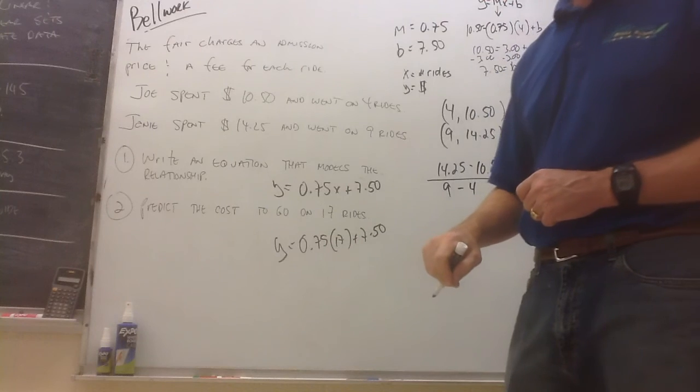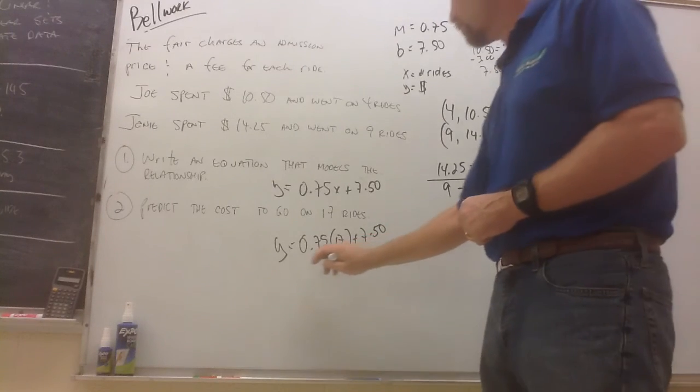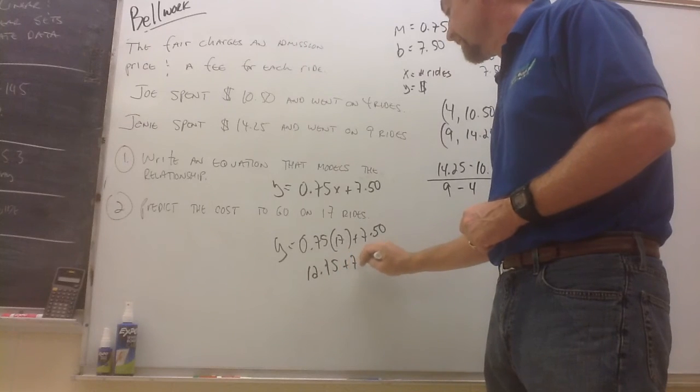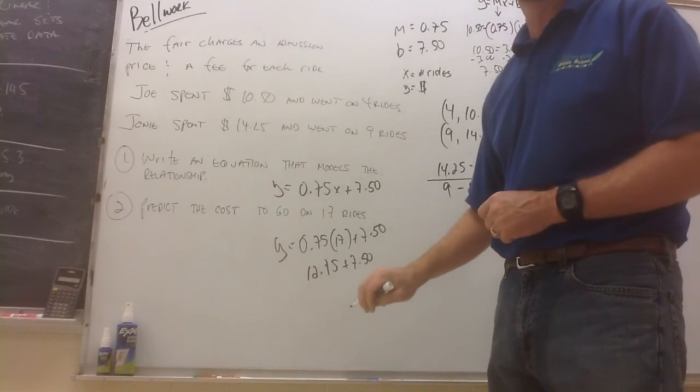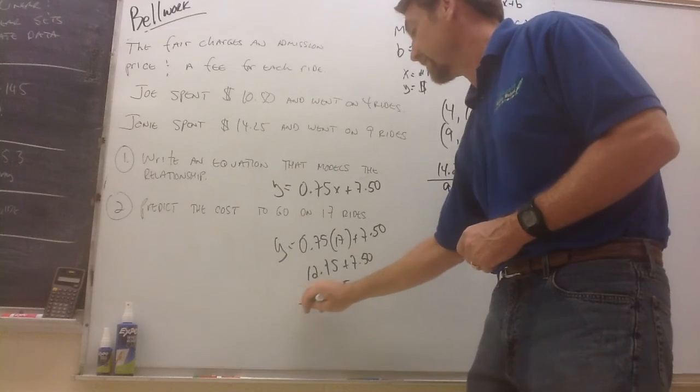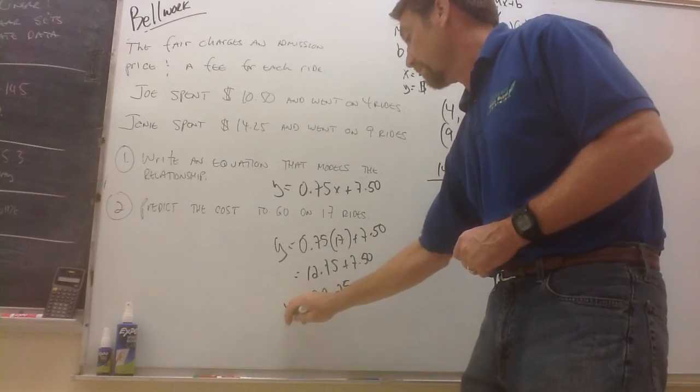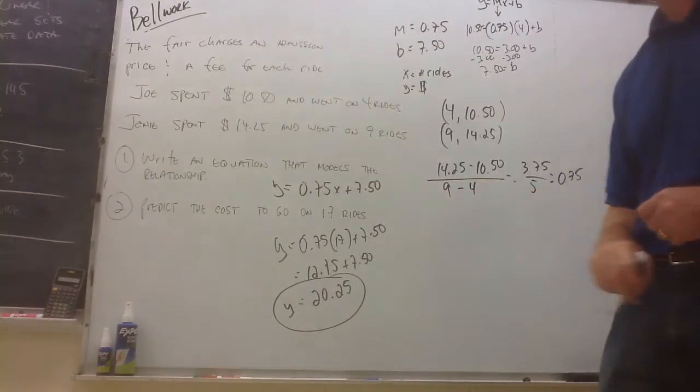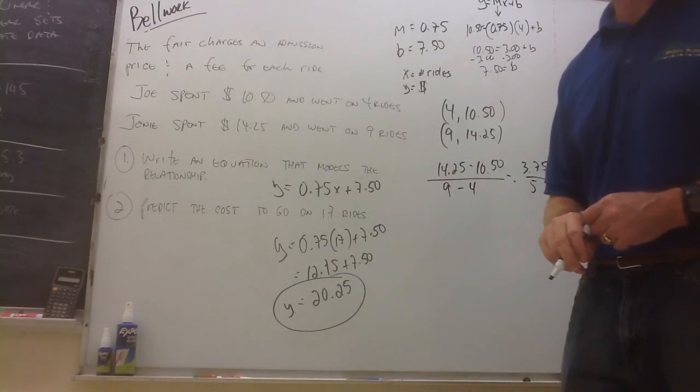$0.75 times 17 is $12.75 plus $7.50. So the total cost to go on 17 rides would be $20.25.